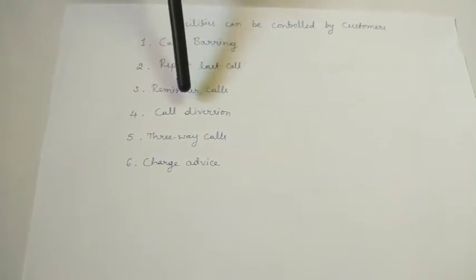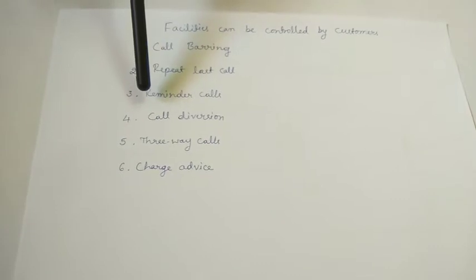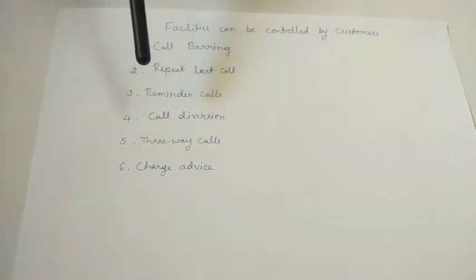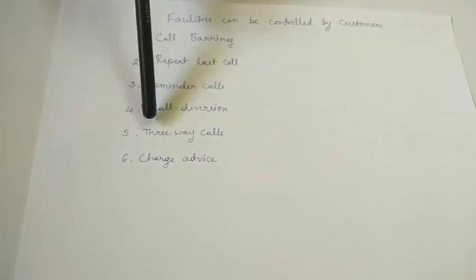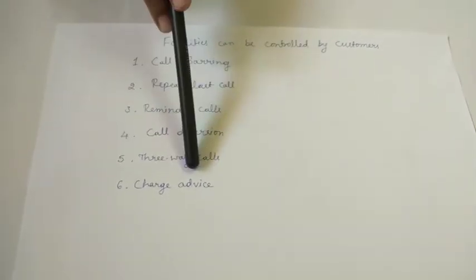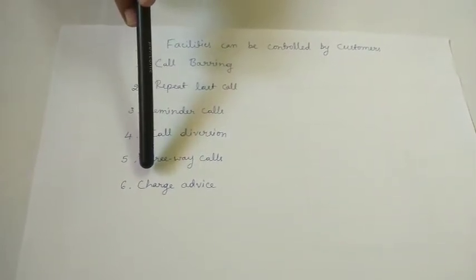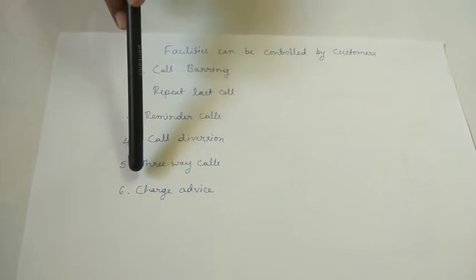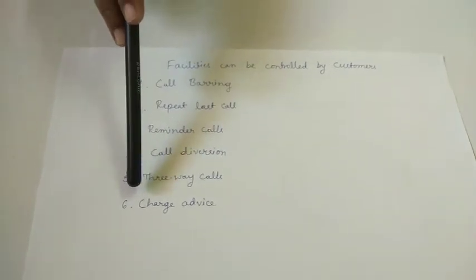Fourth is call diversion — everyone nowadays knows how to divert a call if you are not using your earlier phone number. Fifth is three-way calls, which may be a new term but these are essentially conference calls. If two persons are communicating and a third person wants to join, they can — that is a three-way call. Sixth is charge advice: in the earlier days, two persons wanting to communicate gave instructions to the operator, who connected them, and the call duration and charge were monitored in the exchange. That is charge advice. All these facilities were not provided by the crossbar system.